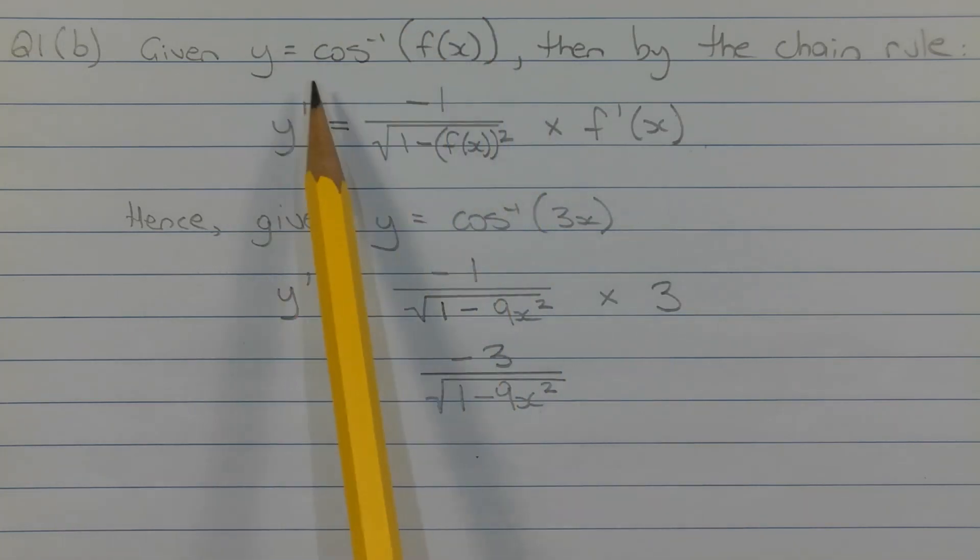In other words, the derivative of the outer function, which is the inverse cos function, multiplied by the derivative of the inner function, which is f of x.